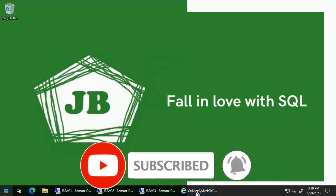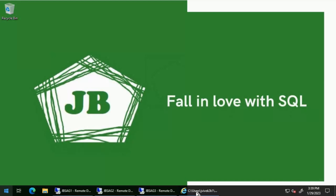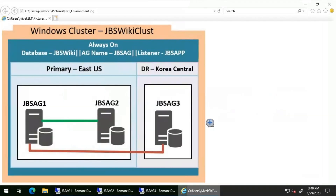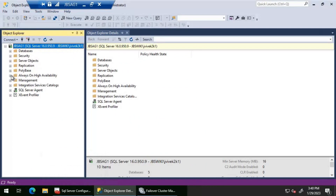Good day everyone. We will check what happens when we try to delete an Always-On availability group from SQL Server Management Studio connected using an Always-On listener name. I'll be using this environment for our video: JBS AG one and JBS AG two are synchronous replicas, JBS AG three is an asynchronous replica. The availability group is configured as JBS AG, the listener name is JBS APP, and this availability group will have a database called JBS wiki added to it. Let's log into the primary server, which is JBS AG one.